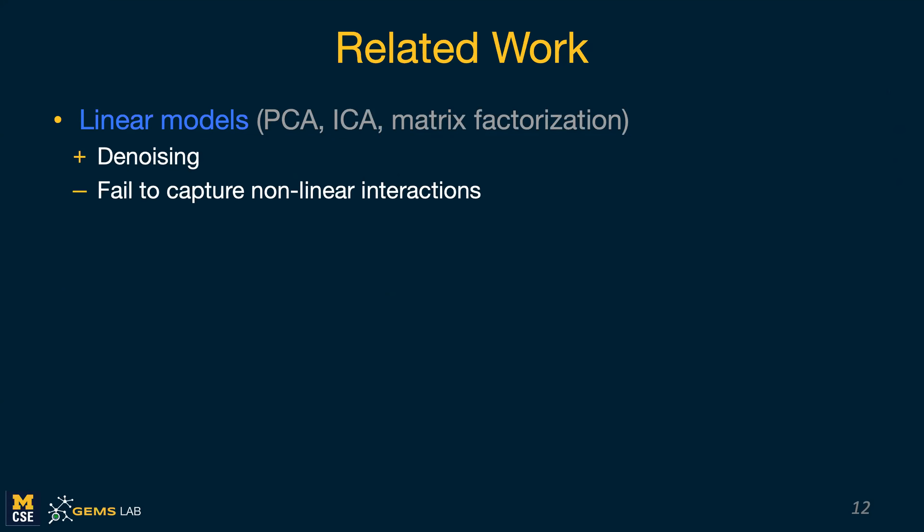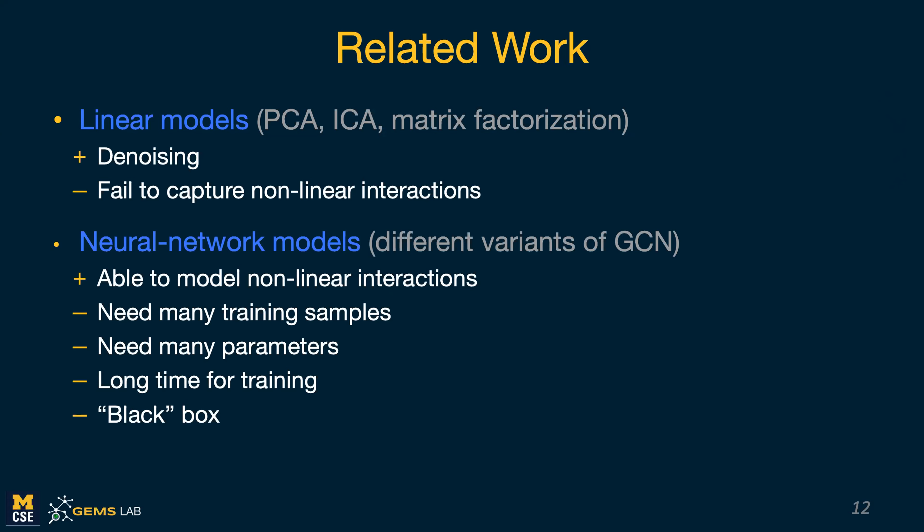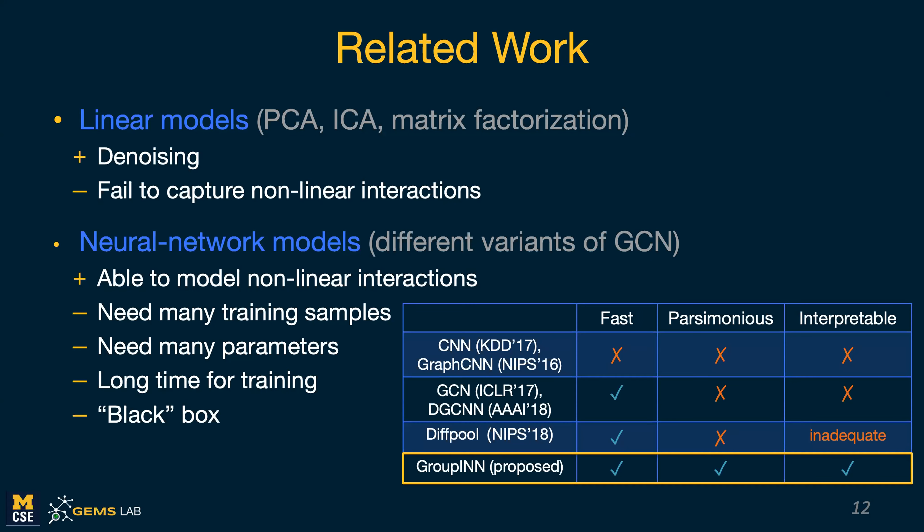In graph classification, there is a lot of related work including linear models, and in neuroscience they use a lot of ICA. These are great models for denoising the data, but they don't capture nonlinear interactions that have been found in real datasets. On the other hand, neural network models do capture these nonlinearities, but they require many training samples, often learn a lot of parameters, take long for training, and are often accused as black boxes. The approach I'm going to present is called Grouping-based Neural Network, which is fast, parsimonious, and interpretable compared to other models proposed at the time.